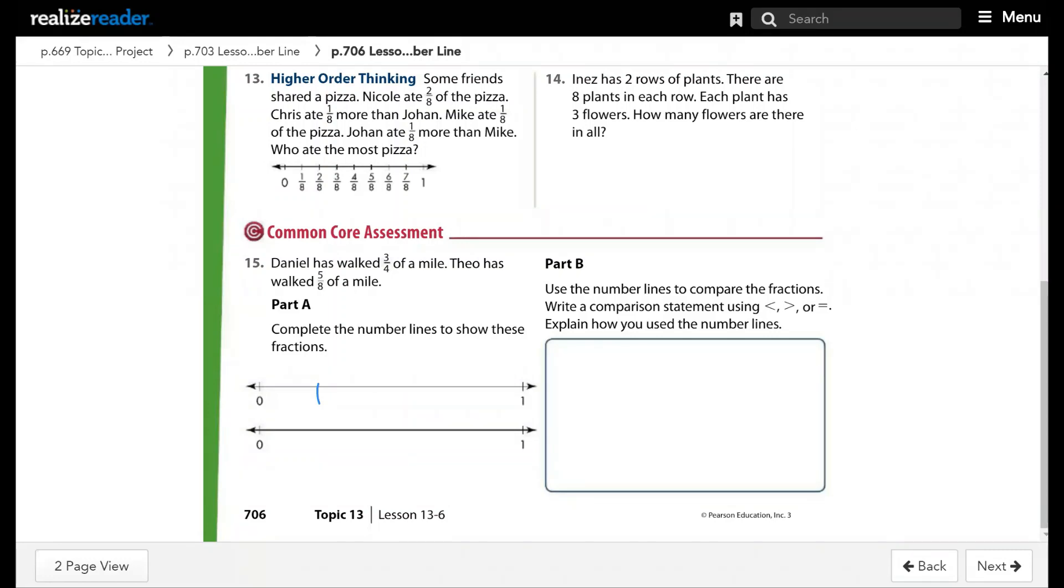1, 2, 3, and this is 4. And out of 8, 1, 2, 3, 4, 5, 6, 7, 8. So 3 over 4, this is 1 over 4, 0, 1 over 4, 2 over 4, this is 3 over 4. And 5 over 8, 0, 1 over 8, 2 over 8, 3 over 8, 4 over 8, 5 over 8, which is here. So which one is greater? The one on the right, which is 3 over 4.